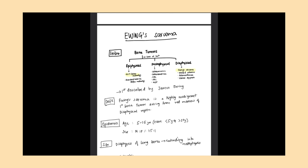Starting with the introduction, bone tumors are divided into three types based on location: epiphyseal, metaphyseal, and diaphyseal. Epiphyseal tumors include giant cell tumor and chondroblastoma. Metaphyseal tumors include osteosarcoma, osteochondroma, aneurysmal bone cyst, simple bone cyst, and non-ossifying fibroma. Diaphyseal tumors include Ewing sarcoma, osteoid osteoma, adamantinoma, and fibrous dysplasia.